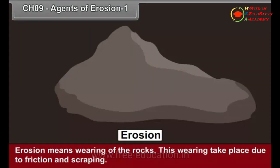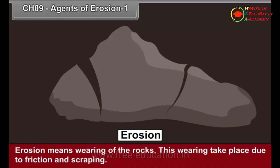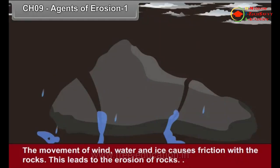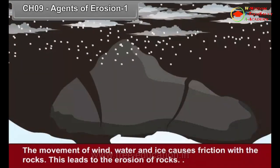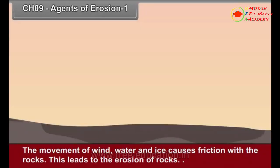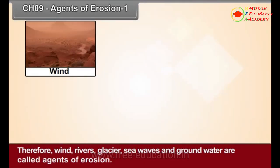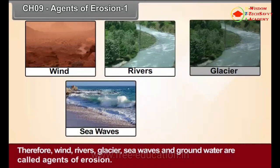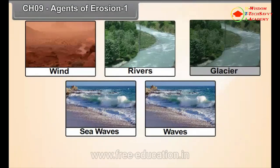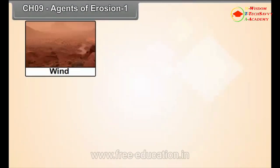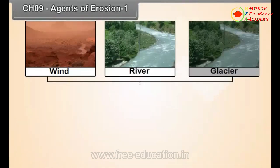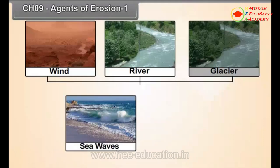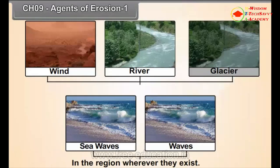Erosion means wearing of the rocks. This wearing takes place due to friction and scraping. The movement of wind, water and ice causes friction with the rocks, leading to the erosion of rocks. Therefore, wind, rivers, glaciers, sea waves and ground water are called agents of erosion. The work of wind, river and glacier is controlled by the climate of the region, while sea waves and ground water work wherever they exist.